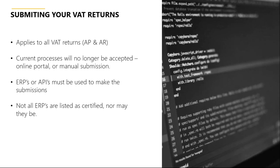The current processes are no longer accepted — for a lot of businesses that's the online portal. Your ERP now has to be able to make the submission digitally to a required platform. Not all ERPs are listed as certified — there was a notable exception of Oracle when last I looked at the listing, and there will probably be other platforms in use that aren't on the list. The link is on one of the last slides in this deck — it takes you to the gov.uk website where the list of ERPs and accounting packages are all shown.